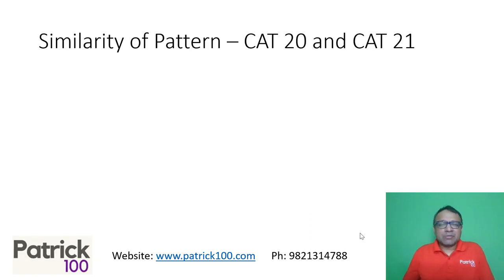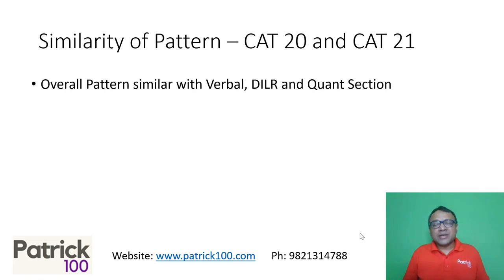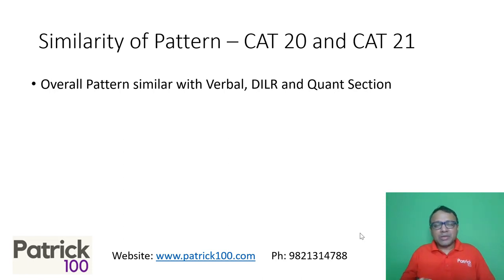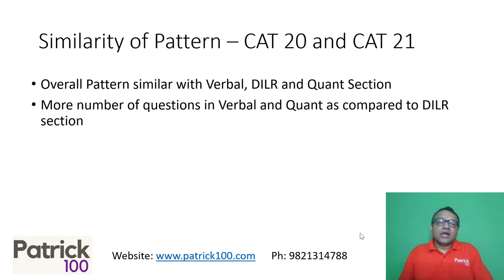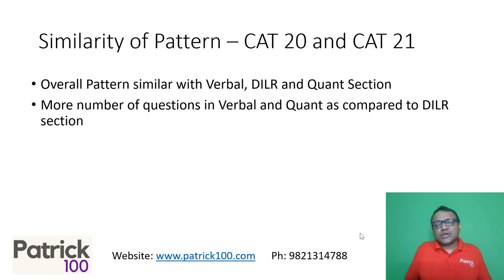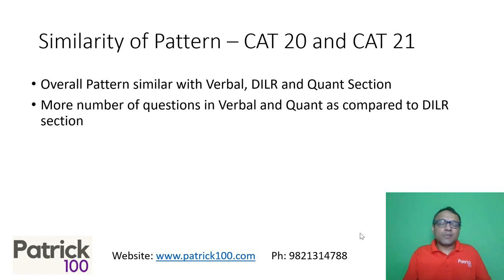So there were a lot of similarities. CAC continued with the pattern it has always had. The overall pattern was similar in terms of verbal, type of questions — similar. There are no major surprises. It was more or less a continuation of what CAC normally does. Every year, verbal and quant have a higher number of questions compared to DLR, and this year also the number of questions in verbal and quant were higher than DLR. So it's more or less a continuation of the overall pattern.